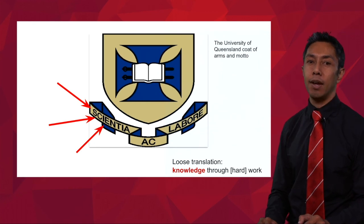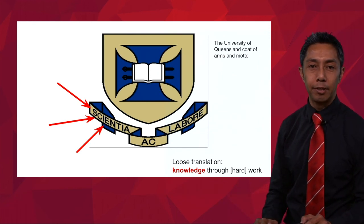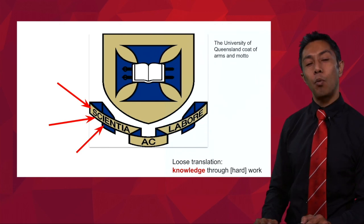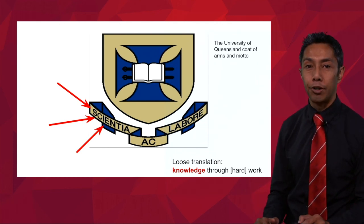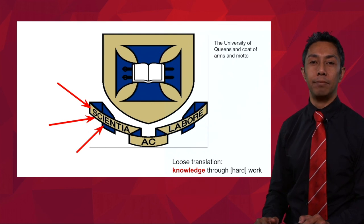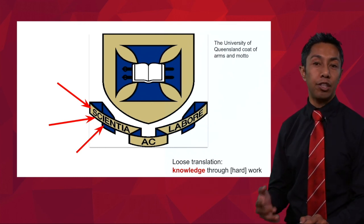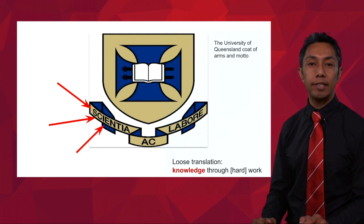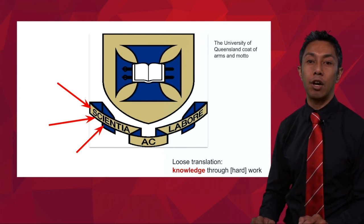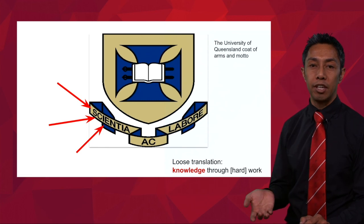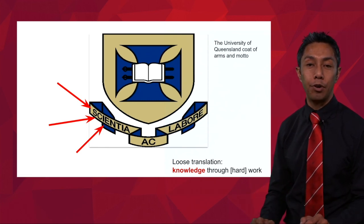Let's go all the way back to the very beginning of this story. When we look at the word science itself, it actually comes from a Latin word, scientia, and scientia just means knowledge. You can see it being used here in the University of Queensland coat of arms and motto. Their motto is scientia ac labore, which just means knowledge through hard work.